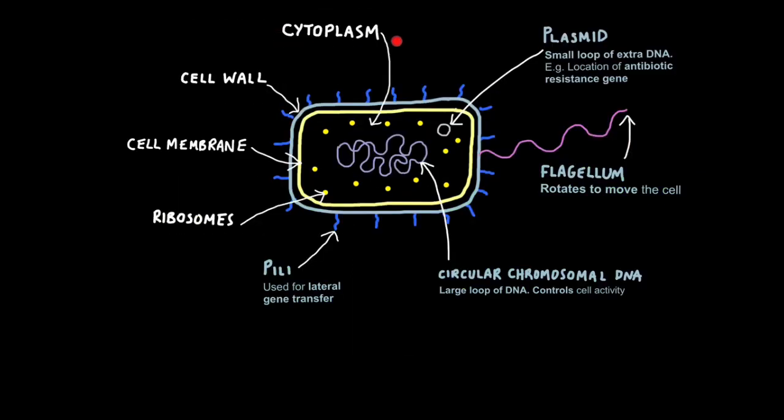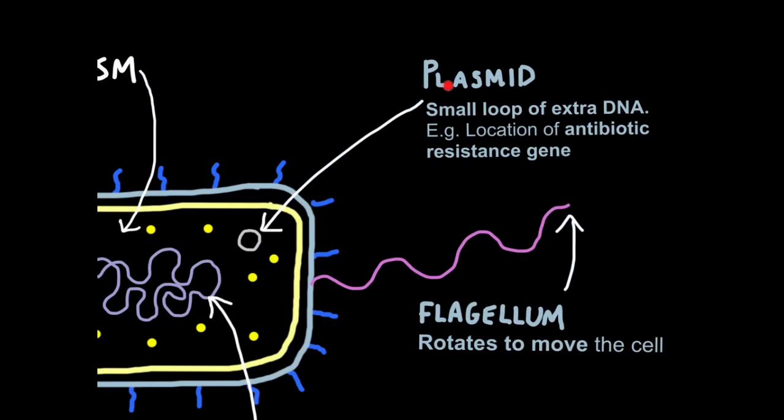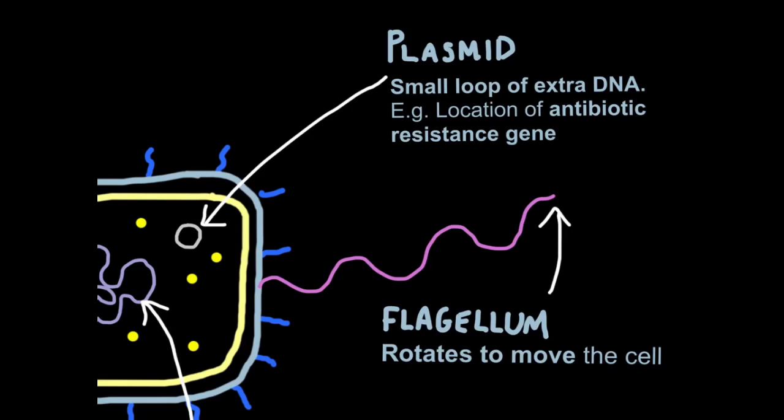Bacteria cells also have cytoplasm, cell wall like plants, cell membrane, and ribosomes, which again have the same function as I've already discussed. Unique to bacteria is circular chromosomal DNA, which is a large loop of DNA, which controls cell activity. So this is where you'll find the genes. But plasmids are also found in bacteria cells, and these are small loops of extra DNA. Genetic engineers find this loop really convenient. Because of its small, manageable size, we can tamper around with it, insert genes, and make the bacteria make things that are useful to us, like insulin. This is where you'll find genes for something like antibiotic resistance. For more on plasmids, watch the tutorial on genetic engineering.